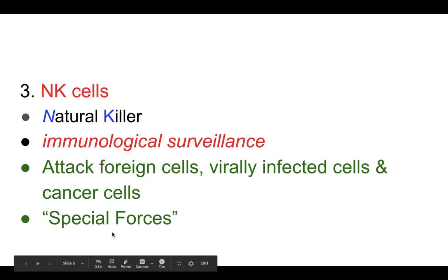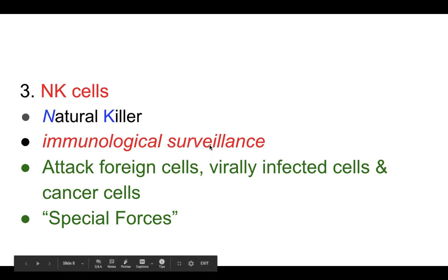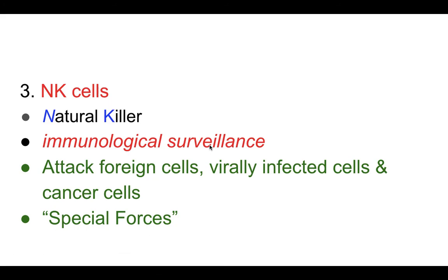Then you've got special forces: NK cells, called natural killers. They do what's called immunological surveillance, meaning they are constantly traveling around your cells — very stealthy. They attack anything they come in contact with that isn't supposed to be there: any foreign cell, any of your good cells infected by viruses, any cancer cells. We all have cancerous cells — everybody does — but most of the time your body just destroys them with these NK cells. I call them special forces because they're stealth and doing this the whole time in your body.